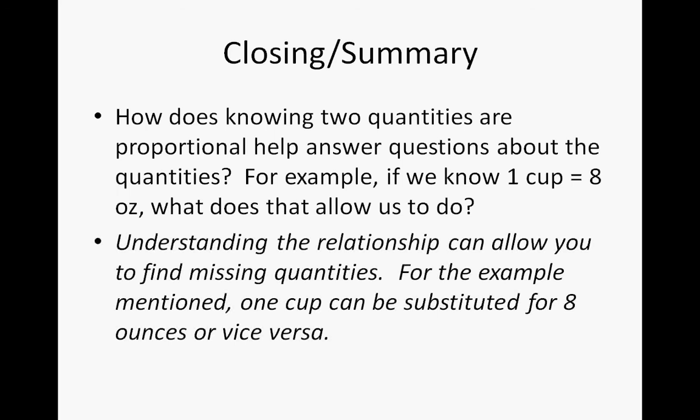Understanding the relationship can allow you to find missing quantities. For example, one cup can be substituted for eight ounces or vice versa. If you have the number of ounces, you can determine what the cups are. This is going to be important for any opportunity where we have a missing quantity — knowing that we have a proportional relationship will help us solve for the other quantity and vice versa.